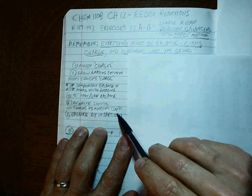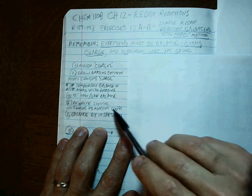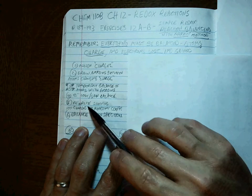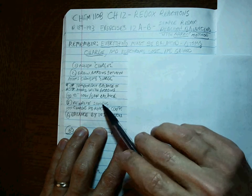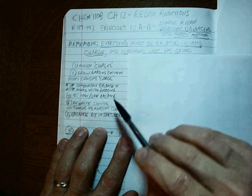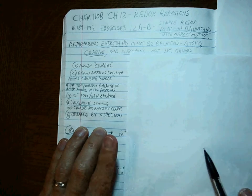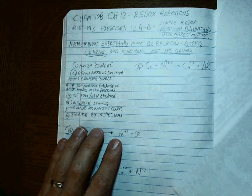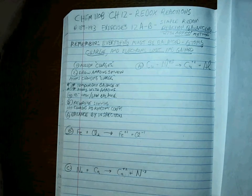After that it's all about getting the reactant coefficients, which allows you to balance the rest very easily. We rewrite showing just the ion charges and the reactant coefficients, and then balance by inspection. Here are the three problems: A, B, and C.